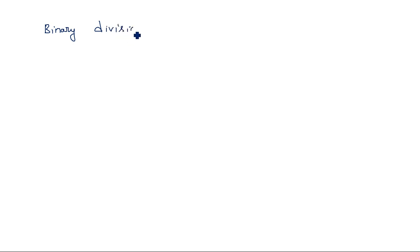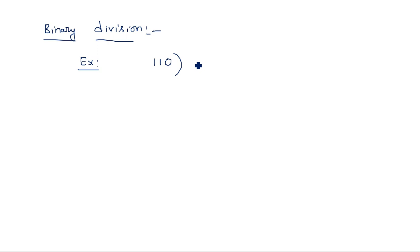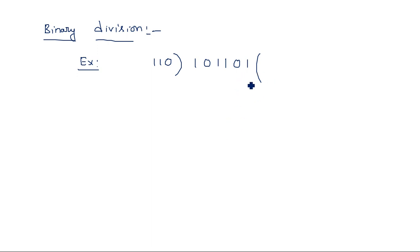And finally, binary division. Binary division is also like normal long division. For example, dividing 1 0 1 1 0 1 by 1 1 0. You need to find the quotient and the remainder.